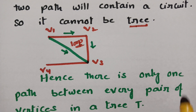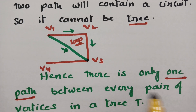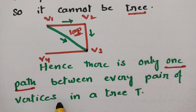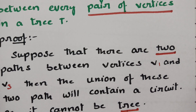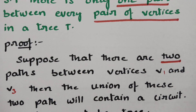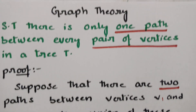Hence there is only one path. If you want to make a tree, there is only one path between every pair of vertices in a tree. This is the example. If you give this in the examination, this proof is enough for your solution.